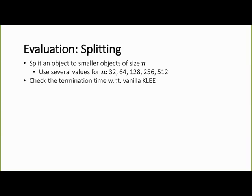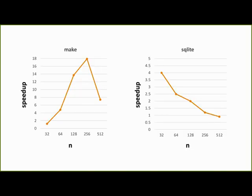In the evaluation of the splitting operation, we choose a simple heuristic which splits an object to smaller objects of size n. We experiment with several values for n, and check the termination time with respect to vanilla KLEE. In the evaluation, we observe two main patterns. For example, in make, the best results were obtained where n is roughly equals to 200, and when we increase further the value of n, we get less speedup. In SQLite, the best result was obtained for a small value of n, and when we increase the value of n, we also get less speedup.